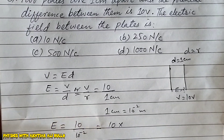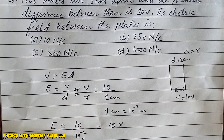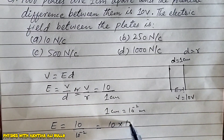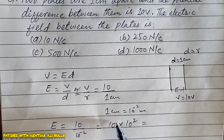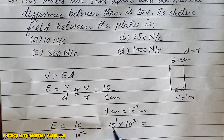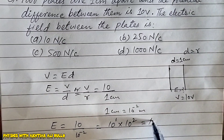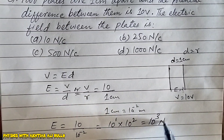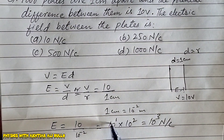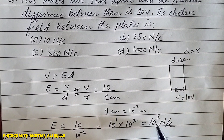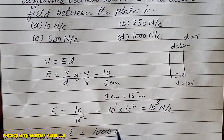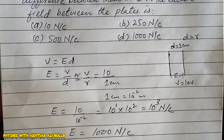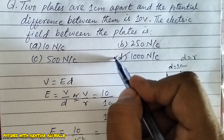So, 10 divided by 10 raised to the power minus 2 — when we take 10 raised to the power minus 2 into the numerator, since the bases are the same we add the powers in multiplication, giving us 10 to the power 3 Newton per coulomb. We can also write this as 1000 Newton per coulomb, so the correct option is D: 1000 Newton per coulomb.